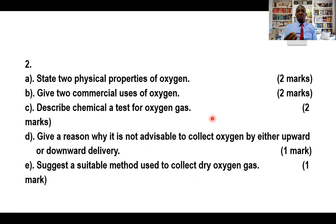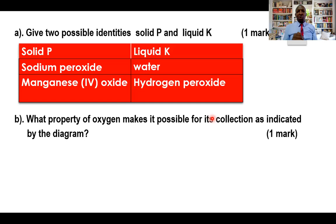Now let us look at the expected responses. Remember, before you go for the answers, pause the video and work on the questions. There are two solids that can be used when you're preparing oxygen. The solid P can be sodium peroxide reacting with water. The solid can also be manganese peroxide, but then the liquid will be hydrogen peroxide. Get that one very clearly.